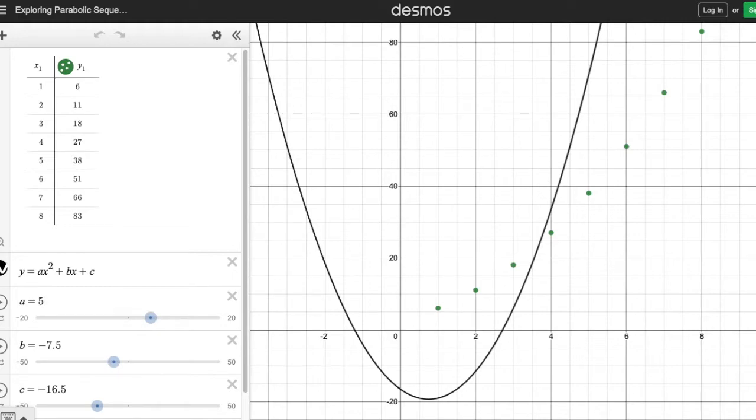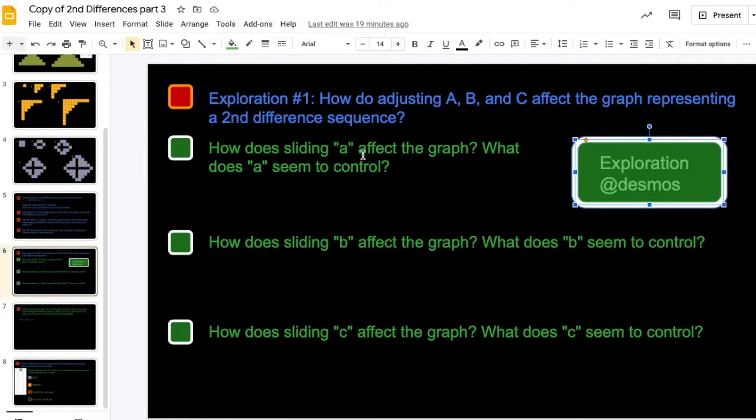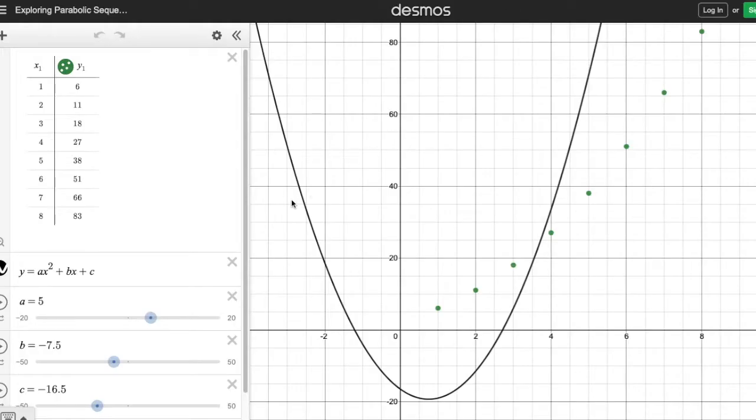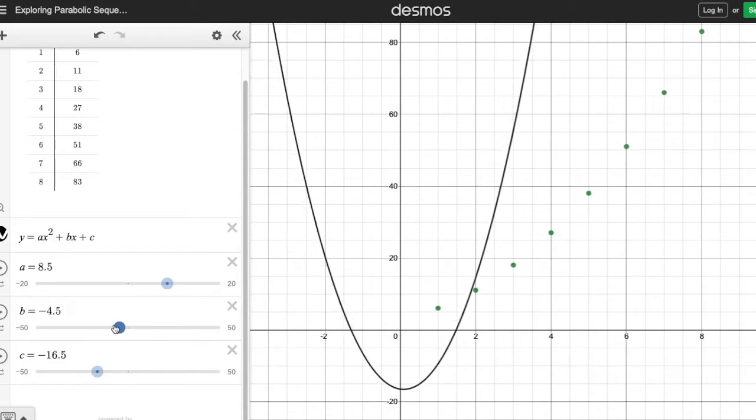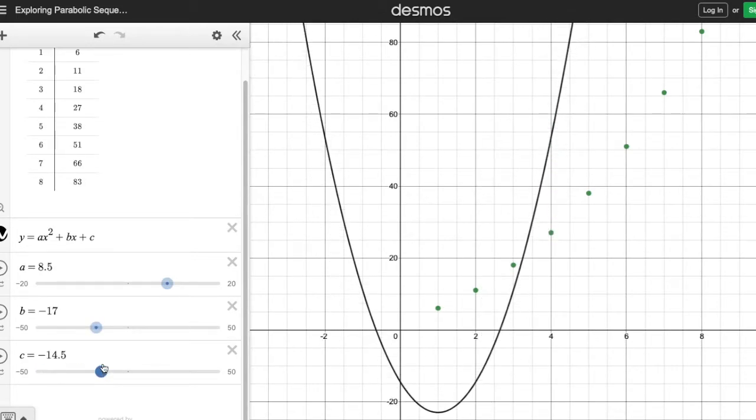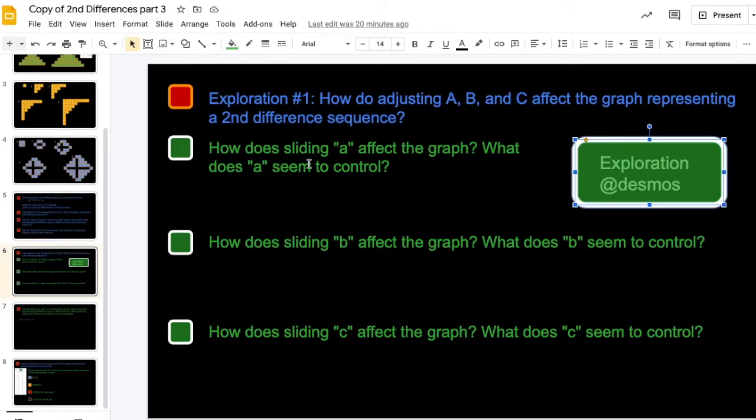And what I want you to do on this graph is figure out, there's a formula on here, ax squared plus bx plus c. I want you to figure out what changing a, changing b, changing c does to the graph. So you've got a table here. That's what's making these green dots. And you have an equation. And you have these three numbers down here. And I just want you to slide them back and forth. See if you can figure out how does changing a affect that curve. How does changing b affect that curve? How does changing c affect that curve? That's what you're going to type in these sections.